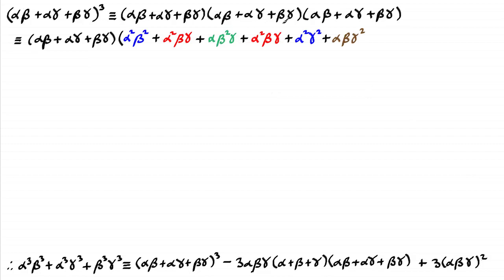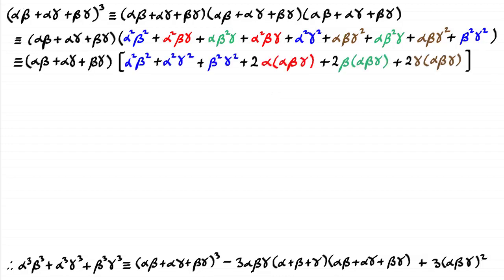And finally beta gamma times each of these three terms. Now I'm going to group up the terms in this bracket. You can see I've written the first three blue terms here at the front — this is the sum of the product pairs of squares of the roots. And then you can see that I've got two of these red terms, two of the green terms, and two of the brown terms.